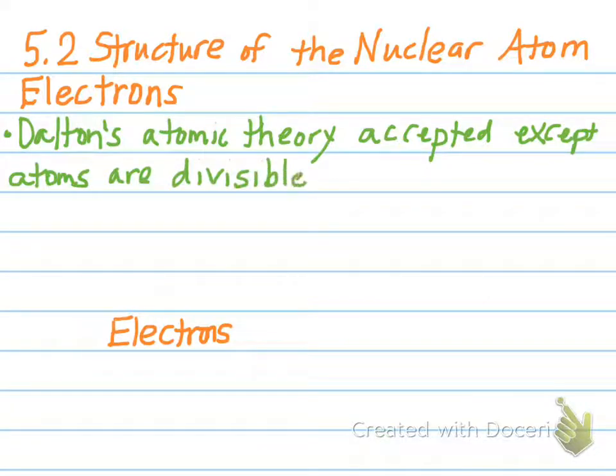Because now we know that inside of an atom we have protons, electrons, and neutrons. I do feel like this is an area where we can excuse John Dalton, because remember, even today we still can't see an atom. So to think that in the mid-1800s he was envisioning what an atom was like and he couldn't see it — we can imagine how he would think it wouldn't be possible to break it down into smaller pieces.